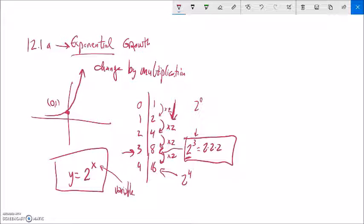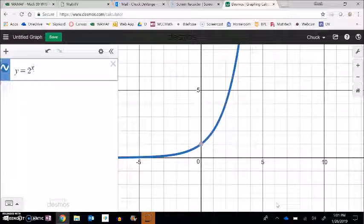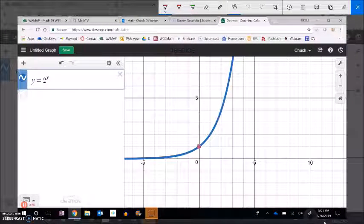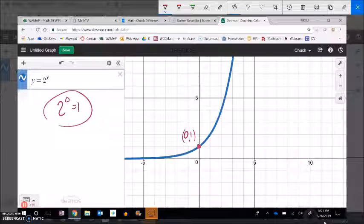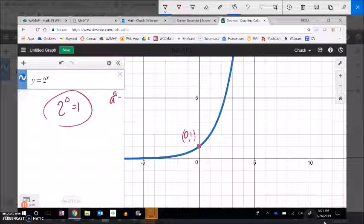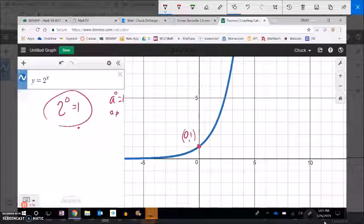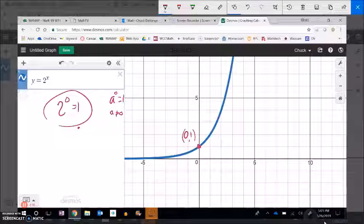And then it goes like this. And every time this goes over by 1, this gets twice as high. And I'm going to graph something like that on Desmos. So let's take a peek at this graph. There it is right there. I'm going to bring that over to here. So there's that point 0, 1. So 2 to the 0th power is 1. And this is true for anything except 0, to the 0th power.